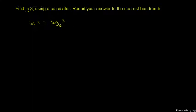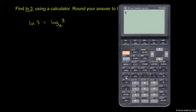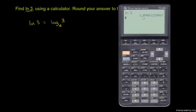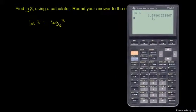e is approximately 2.71. The natural log is LN. So, ln(3) is equal to 1.098.